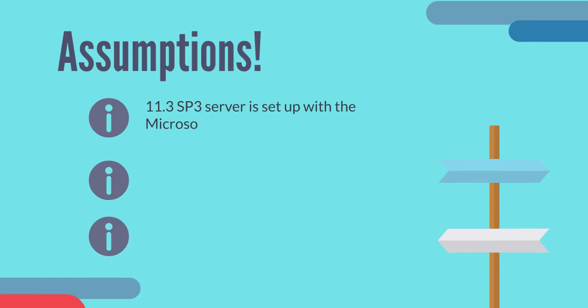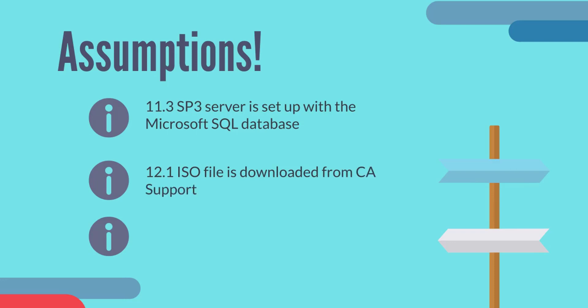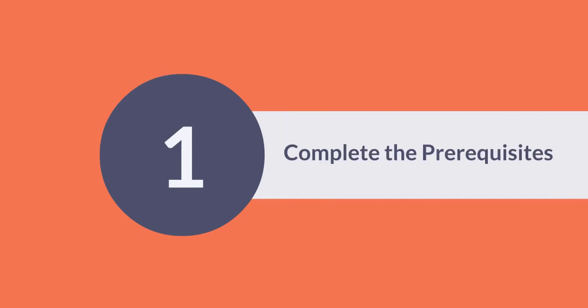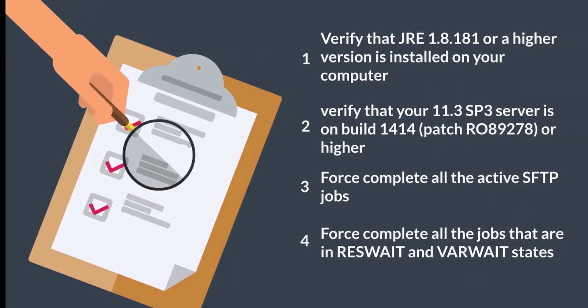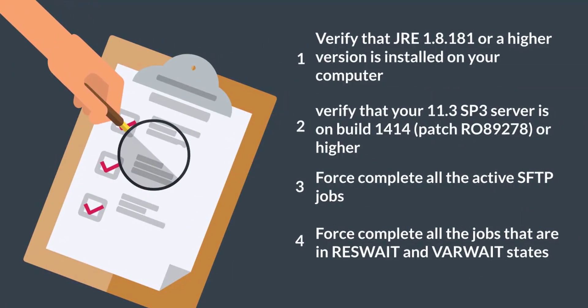Before this demonstration, let's assume that the 11.3 SP3 server is set up with the Microsoft SQL database. The 12.1 ISO is downloaded from CA support, and the 12.1 desktop client is installed on your computer by using the downloaded ISO. Before you start the upgrade, you must complete the prerequisites in the 11.3 SP3 server. Let's get started with the prerequisites.